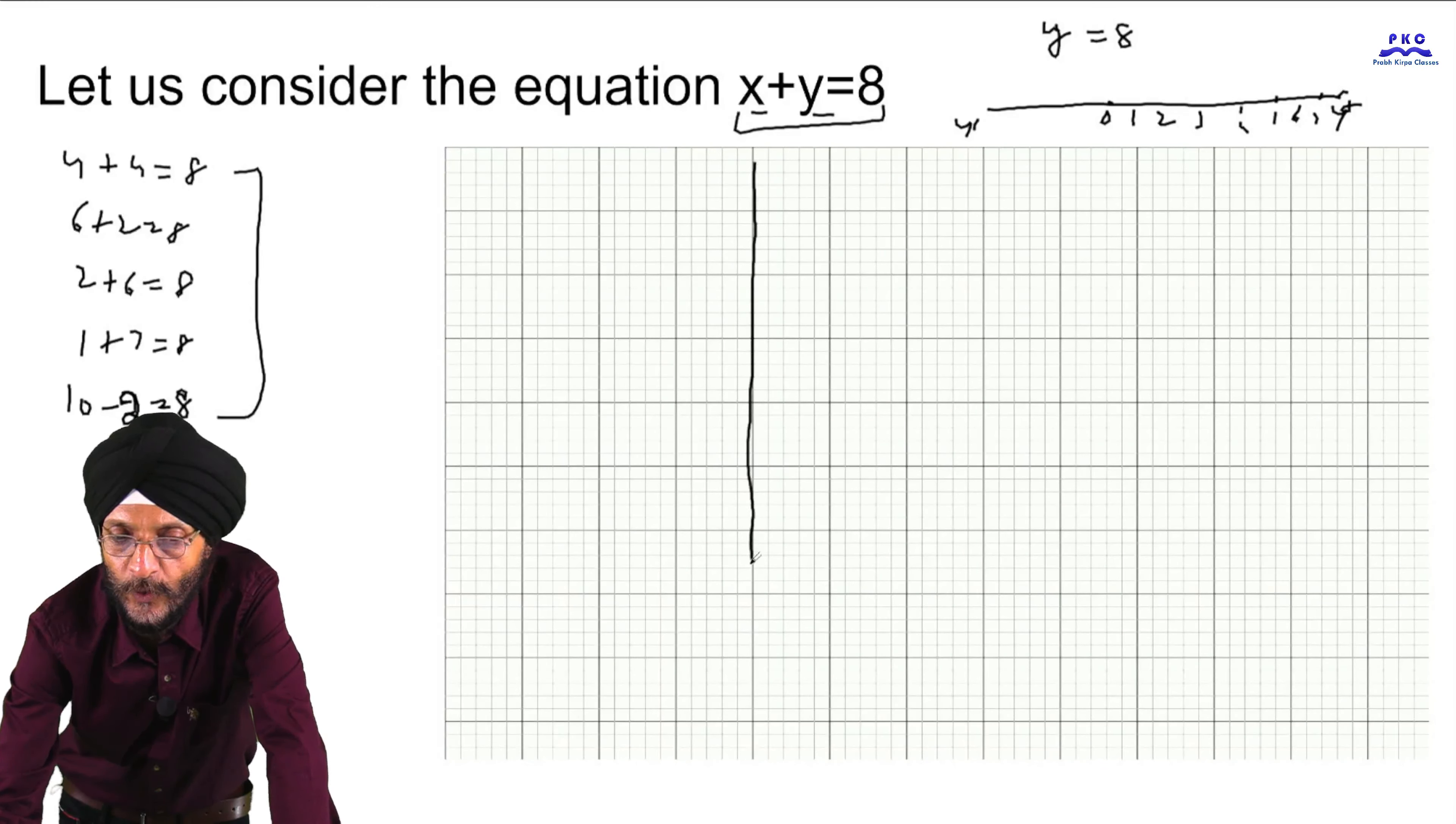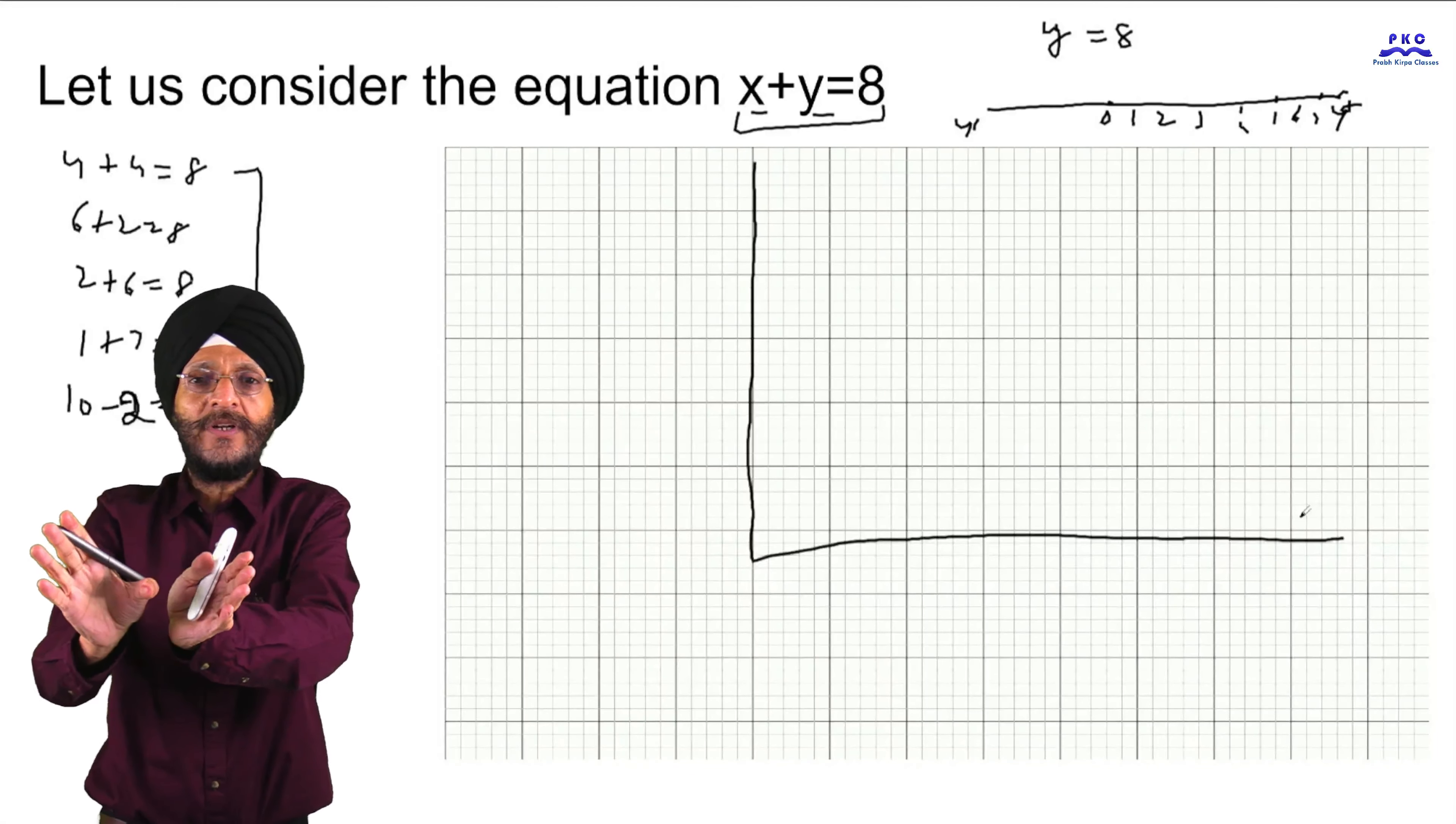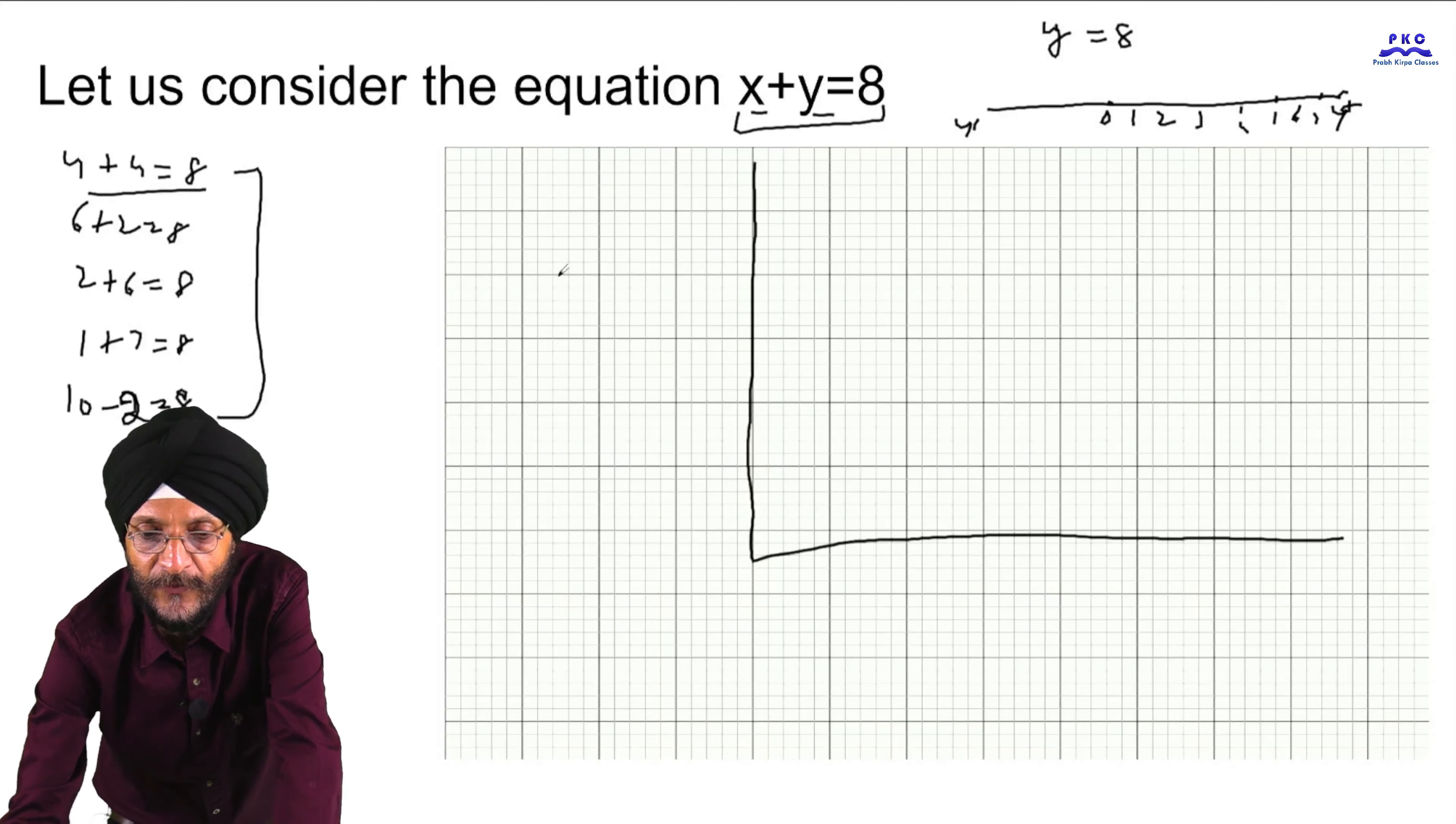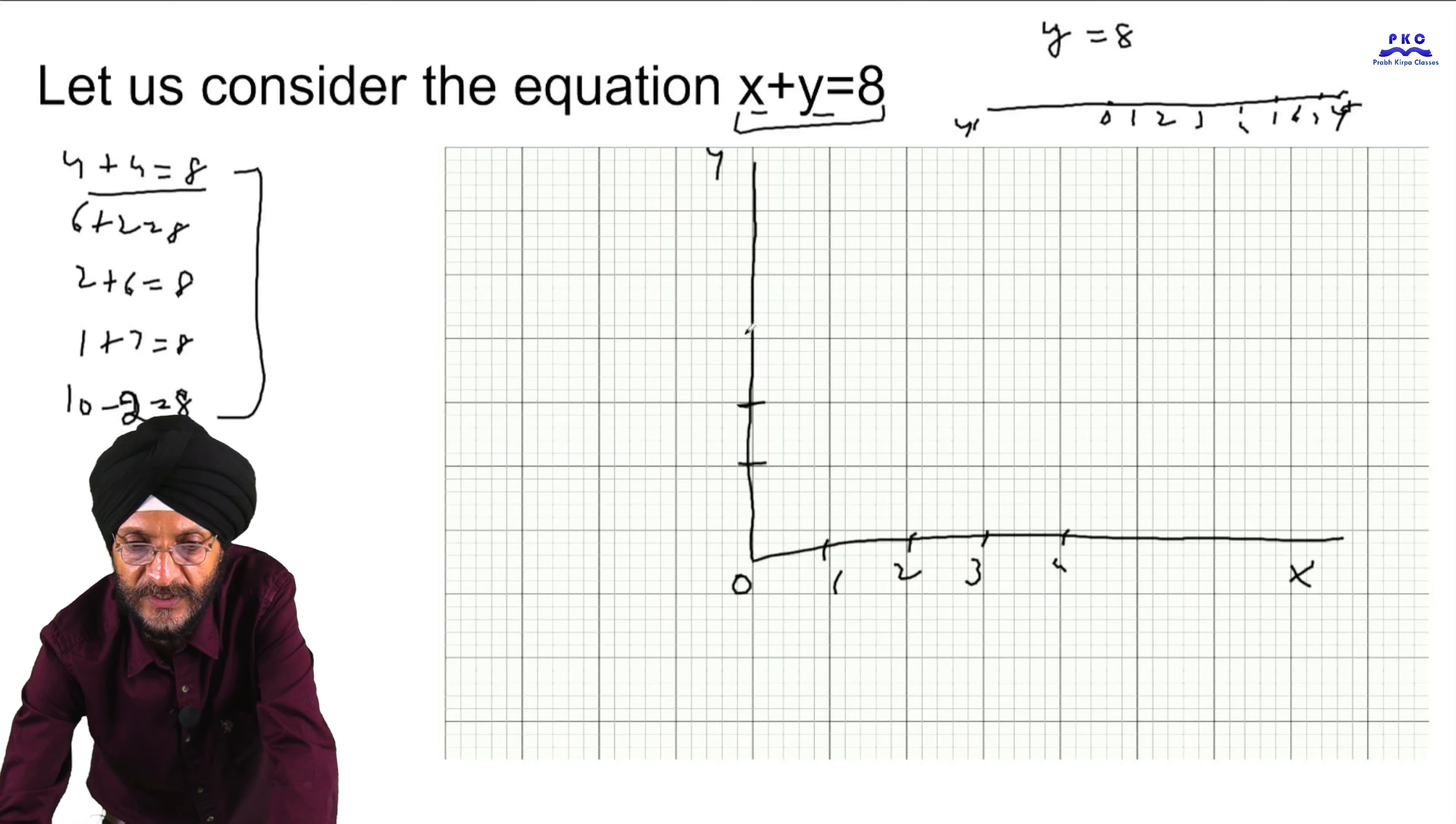Let us have an overview of the same. This is only for ready reference. If we take 4 plus 4, this is the 1, this is 2, this is 3, this is 4, 1, 2, 3, 4. This is the X axis, this is Y axis, this is 1, this is 2, this is 3, this is 4.